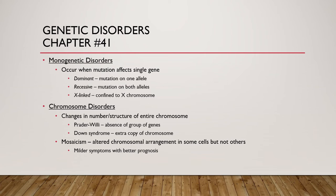Briefly looking at genetic disorders: monogenetic involves a single gene — dominant means the mutation is on one allele, recessive means mutation is on both alleles, and X-linked is confined to the X chromosome. Chromosomal disorders involve a change in the number or structure of a whole chromosome — Down syndrome involves an extra chromosome, Prader-Willi involves absence of a group of genes. Mosaicism is an altered chromosomal arrangement in some cells but not all — these patients tend to have milder symptoms and better prognosis.